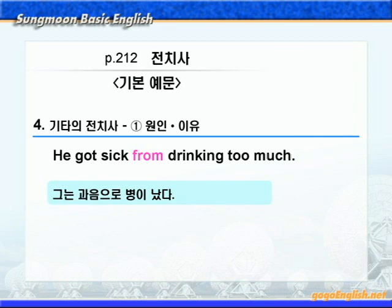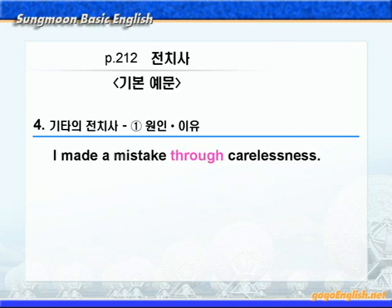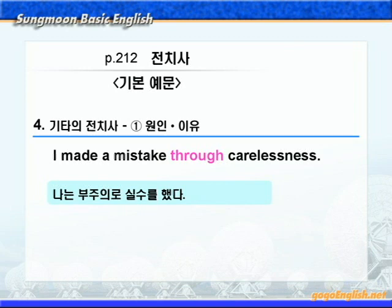이 문장에서 from은 외적인 원인을 나타내죠. 다음으로 전치사 through가 나오는데요. from과 비교해 보시기 바랍니다. 'I made a mistake through carelessness.' 여기 through 역시 원인이나 이유를 나타내니까, '나는 부주의로 실수를 했다'가 됩니다. 여기서는 실수의 원인을 부주의로 돌리고 있습니다. 원인이 부주의나 태만인 경우에는 전치사 through를 씁니다.